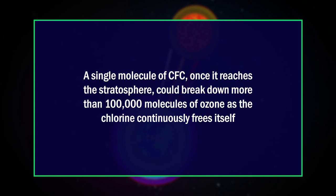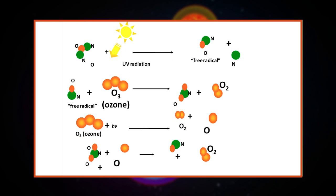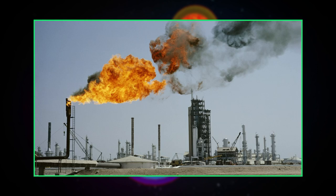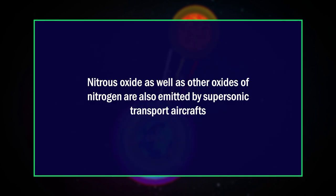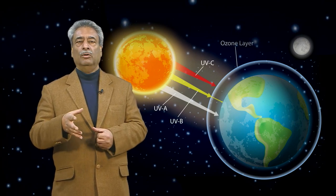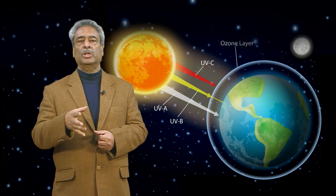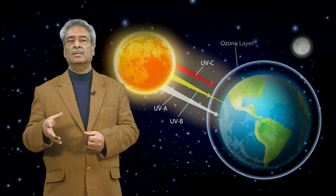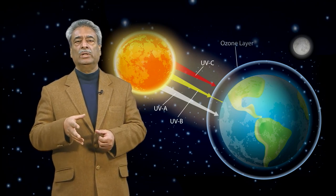In other words, a single CFC molecule, once it reaches the stratosphere, could break down more than 100,000 ozone molecules as the chlorine continuously frees itself. Regarding ozone depletion by oxides of nitrogen: the concentration of nitrous oxide has shown a steady increase over the past years, attributed to large-scale combustion of fossil fuels and enhanced use of nitrogenous fertilizers. Though nitrous oxide is quite inert in the stratosphere, it is photochemically converted into more reactive nitric oxide, which acts as a catalyst, able to begin the destruction cycle again with another ozone molecule after each reaction.